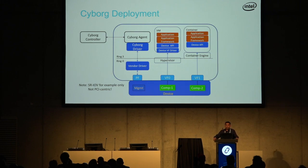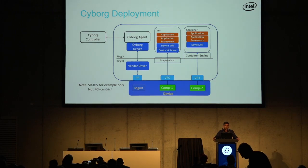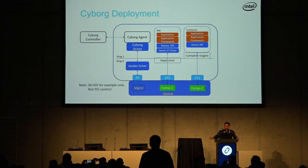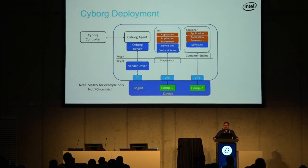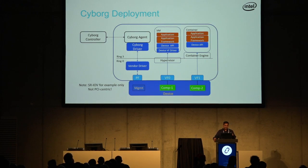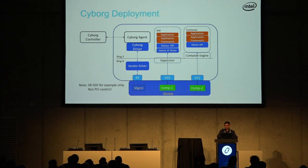Here's a broad view of what a Cyborg deployment looks like. Cyborg could be used standalone even without Nova. The big box is the compute node. You've got a Cyborg controller sitting off to one side, and there's an agent running on every compute node. The agent is augmented by one or more drivers — one driver for AMD GPUs, one for Intel FPGAs, one for Xilinx FPGAs, and so on. These are vendor-provided drivers, and the whole apparatus is designed to have all vendor-dependence isolated within the drivers. The Cyborg core itself is vendor-neutral.